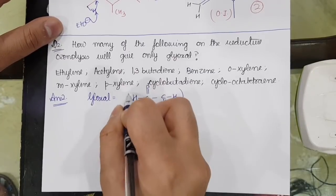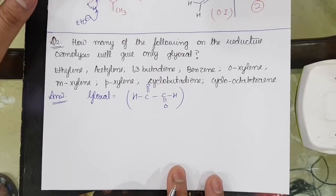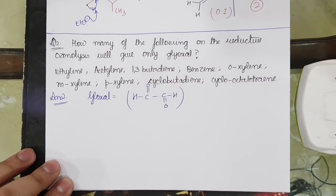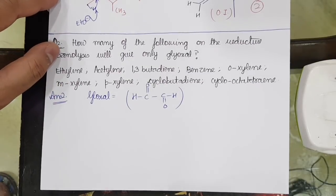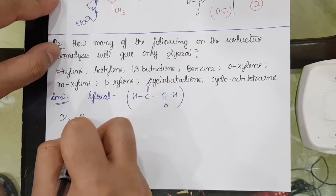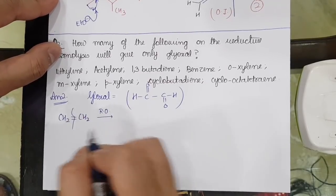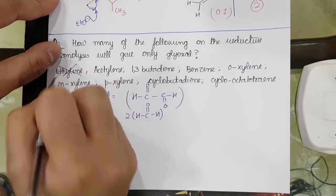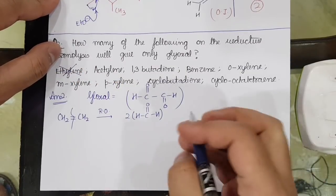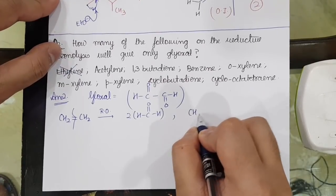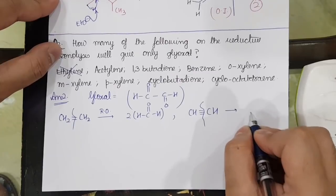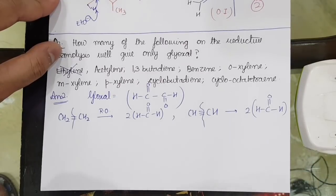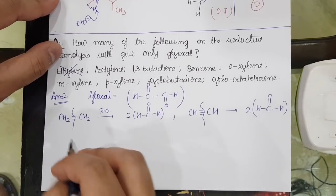We have been given ethylene. Ethylene means CH2 double bond CH2. If I do reductive ozonolysis, then I will get the formation of 2 moles of HC double bond OH, that is formaldehyde. Formaldehyde is forming, so ethylene will not give the formation of glyoxal. Now acetylene is given. Acetylene basically means CH triple bond CH. Here also I will get the formation of 2 moles of HC double bond OH on reductive ozonolysis. On oxidative ozonolysis, acid will form.